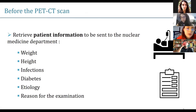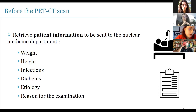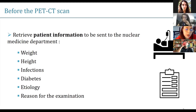Before the exam, it's really important to retrieve all the patient information. For example, at the University Hospital of Liège, the Nuclear Medicine Services asked us to fill out a document with all this information. You should contact your nuclear medicine services and ask about the administrative procedure in your institute. What's important is the weight, the age, if the patient has any infection or suffers from diabetes, the etiology, and of course, the reason for the examination. You need to bring this document to the secretary on the day of the assessment.